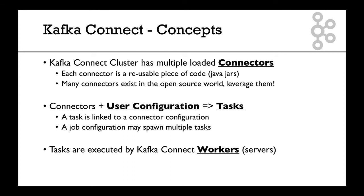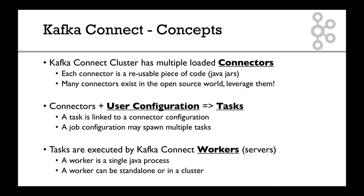Finally, these tasks are executed by the Kafka Connect workers and servers. If you remember, in one of the earlier slides, there was a Kafka Connect cluster with three workers. The workers will take the tasks and execute them. A worker is a single Java process that you run on a server, and usually you can have it standalone or in a cluster. We will take a look at both, but we recommend that you use workers in a cluster.